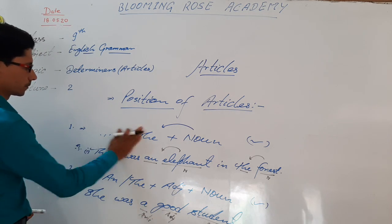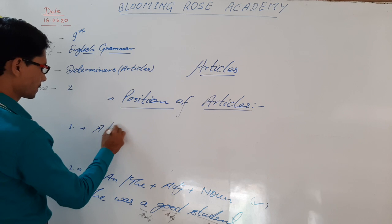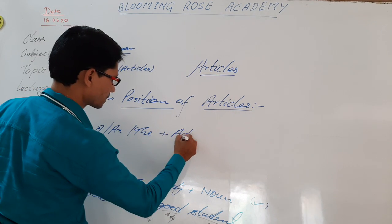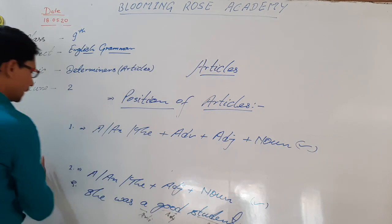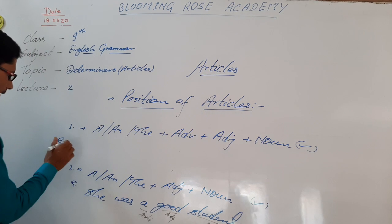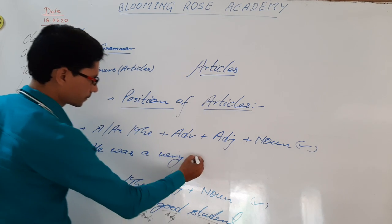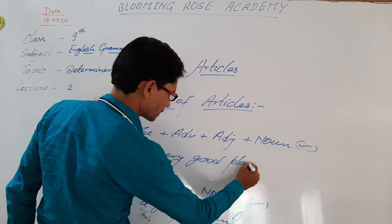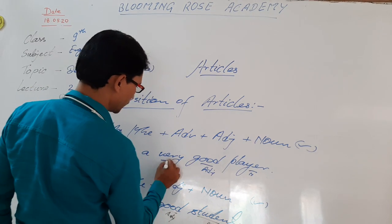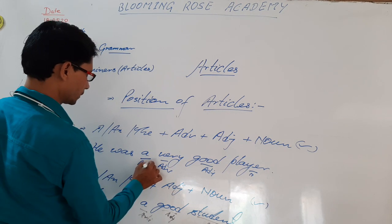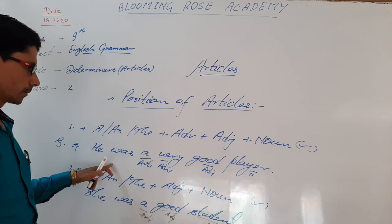The third rule: if before the noun an adjective is given, and before that adjective any adverb is given, then the article is used just before the adverb. For example: 'He was a very good player.' Here, player is the noun, good is the adjective, very is the adverb, and 'a' is the article. So if an adverb precedes the adjective, we use the article before the adverb.